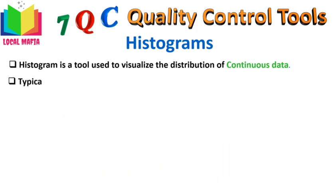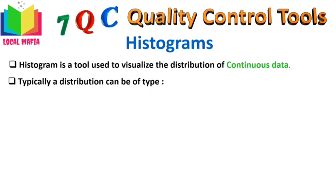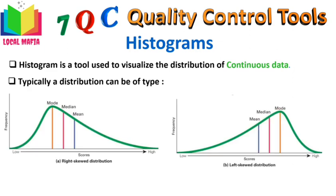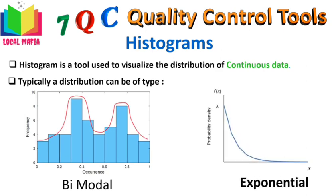The shape of a histogram can vary, giving us different types of distributions. If we have a bell-shaped curve, it is a symmetric distribution. But if one tail is longer than the other, the distribution is skewed — it can be left skewed (also called negatively skewed) or right skewed (also called positively skewed). Apart from that, distributions can be bimodal, multimodal, or exponential. These are the most common distributions you can observe from data.